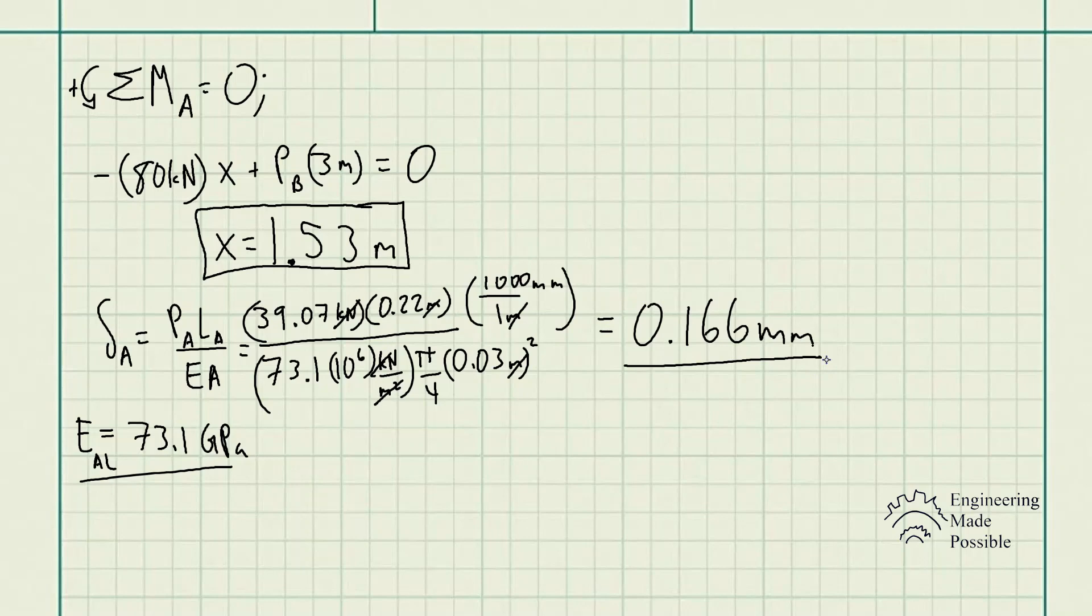Now we utilize Poisson's ratio, right? Poisson's ratio equals negative the lateral strain divided by the longitudinal strain. Since we already have Poisson's ratio given, we can solve for the lateral strain. Let's do that.